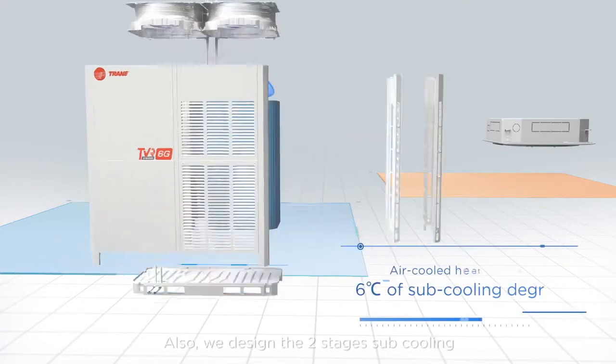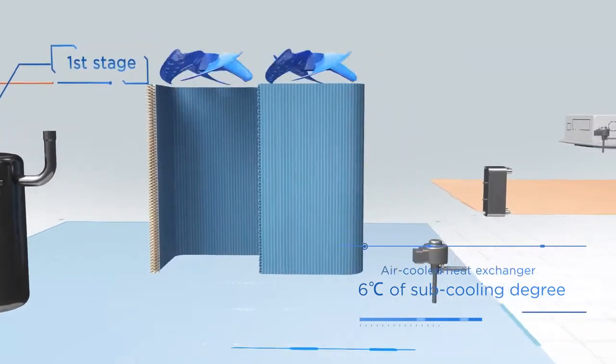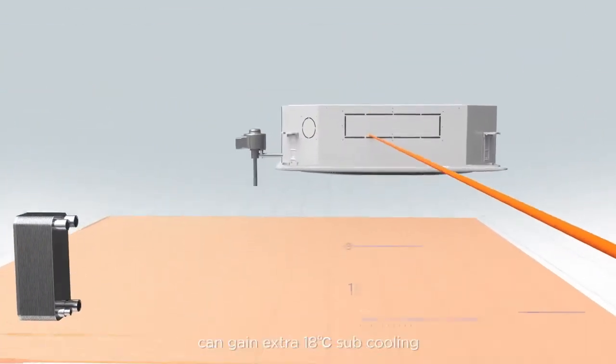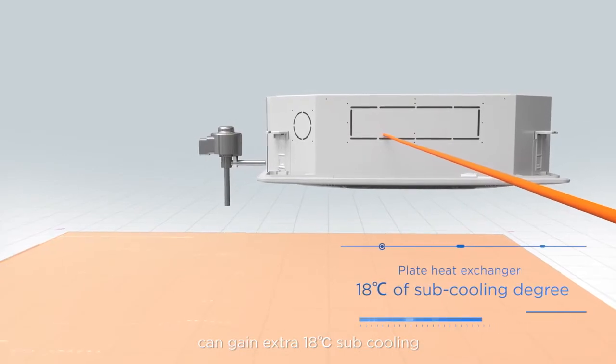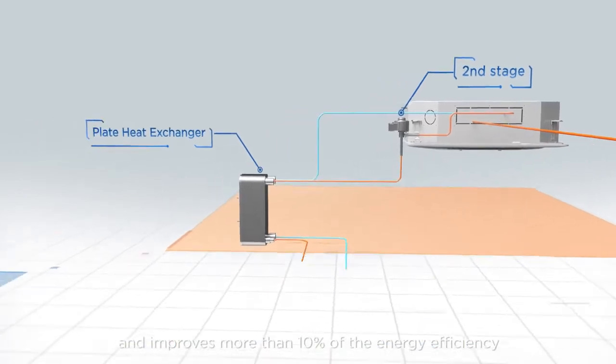Also, we designed the two-stage sub-cooling to optimize refrigerant circuit. Plate heat exchanger as a secondary intercooler can gain extra 18 degrees Celsius sub-cooling and improves more than 10% of the energy efficiency.